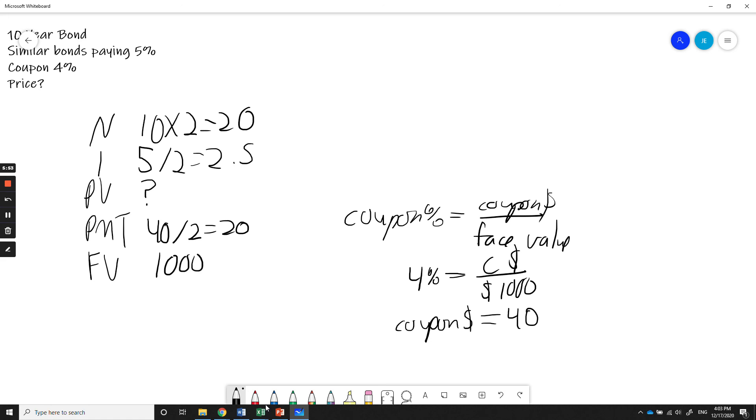Face value always going to be a thousand unless I tell you otherwise. So we plug this all into the calculator and we solve for present value. In this case, present value nine hundred and twenty two dollars and five cents. I wrote a negative there. Well, if we're buying the bond, it's costing us money. We're taking money out of our bank account. Our bank account is negative. Does this make sense? Well, other bonds are paying five percent. This one's only paying four. So I'm not going to pay full value. It should be selling at a discount, which it indeed is.